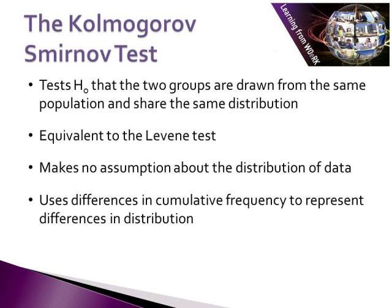The KS test tests the null hypothesis that two groups are drawn from the same population and share the same distribution. It is equivalent to the Levene test when dealing with an independent sample t-test. It makes absolutely no assumptions about the distribution of data and uses differences in cumulative frequency to represent differences in the distribution.